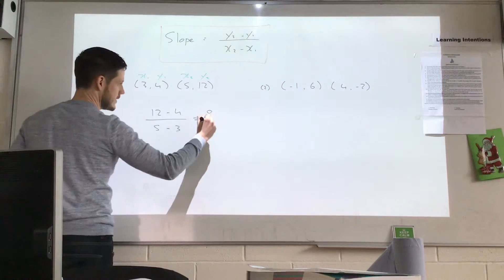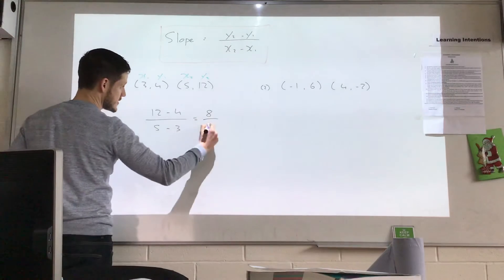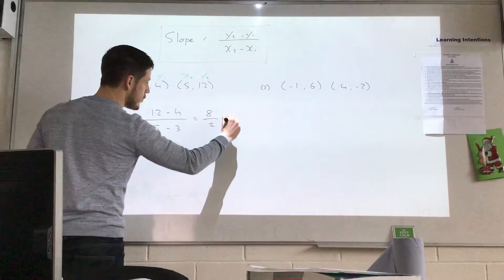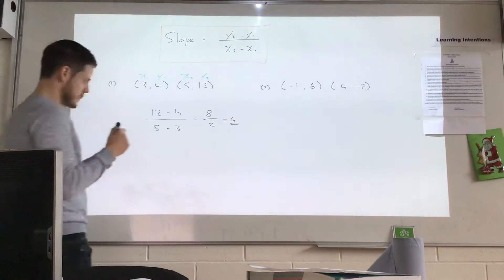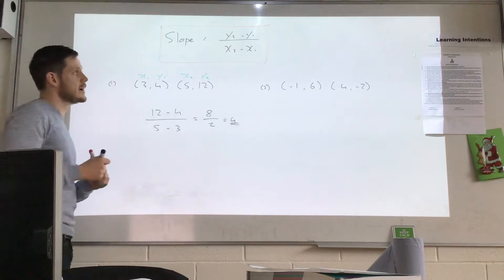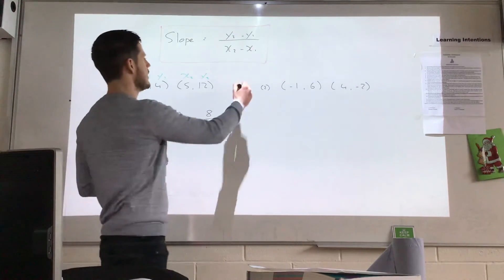And if you look there, 12 minus 4 is 8, and 5 minus 3 is 2. Use your calculator for this. I know that 2 goes into 8 four times, so my slope is 4. But you can put that whole thing into the calculator if you want to. So that's how we figure out the slope. Let's make it a little bit more difficult.